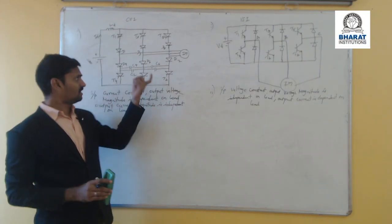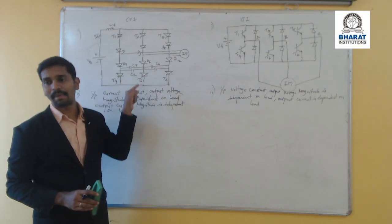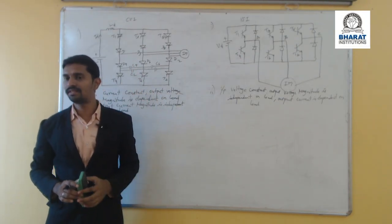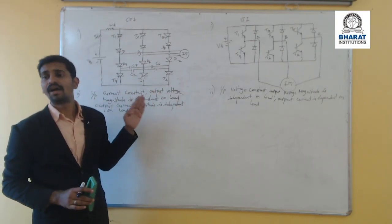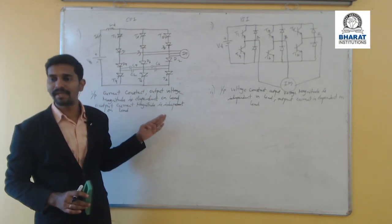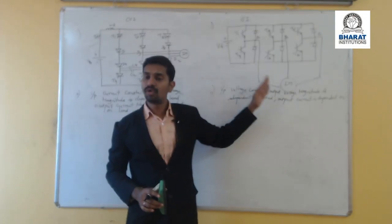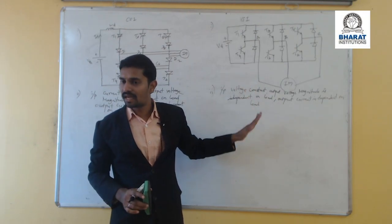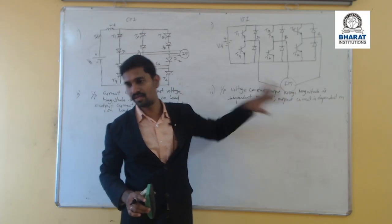The second difference is that in current source inverters, we have capacitors. The purpose of these capacitors is to take care of commutation, so commutation failures do not happen in current source inverters. But in voltage source inverters, we do not have capacitors, so there will be commutation failure in the voltage source inverter.